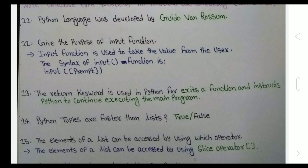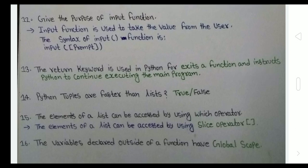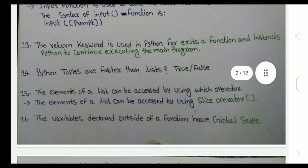As you know, the input function is used to check and prompt the user. The syntax is input prompt. The return keyword is used to exit a function in Python. It instructs to stop remaining program execution. Python tuples are faster than lists. It is true because tuples take low storage compared to lists.